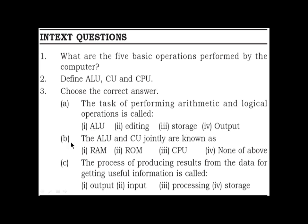B: The ALU and CU jointly are known as: 1. RAM, 2. ROM, 3. CPU, 4. None of the above. C: